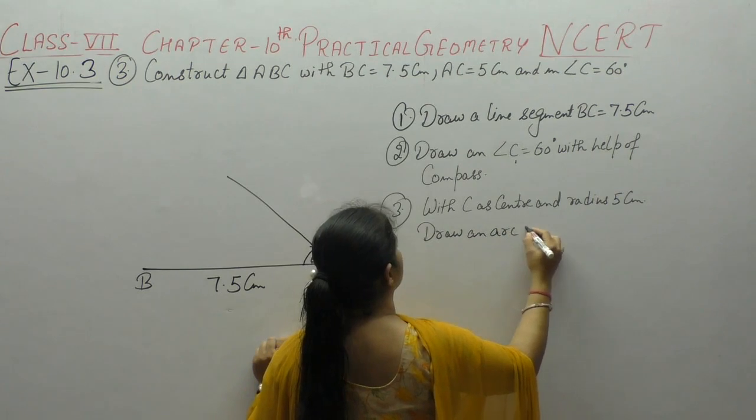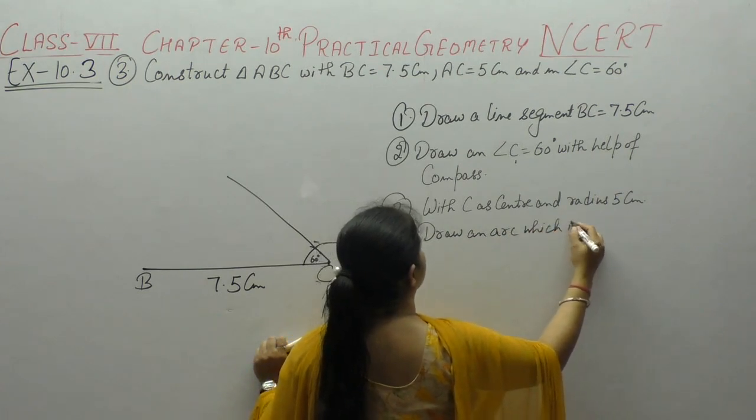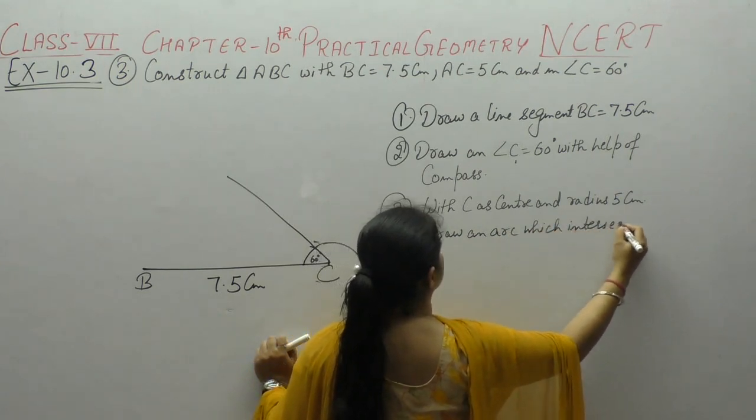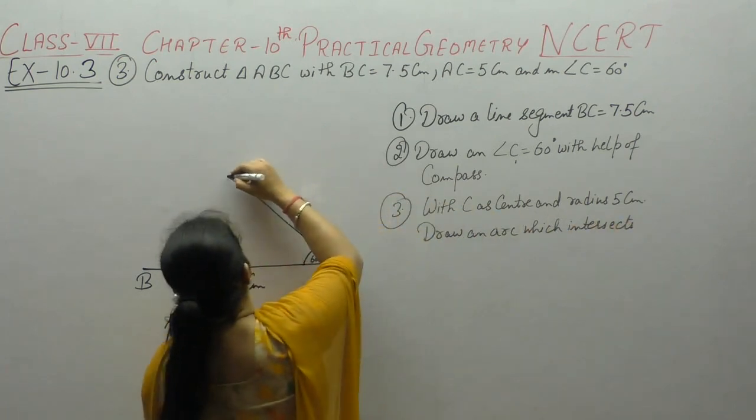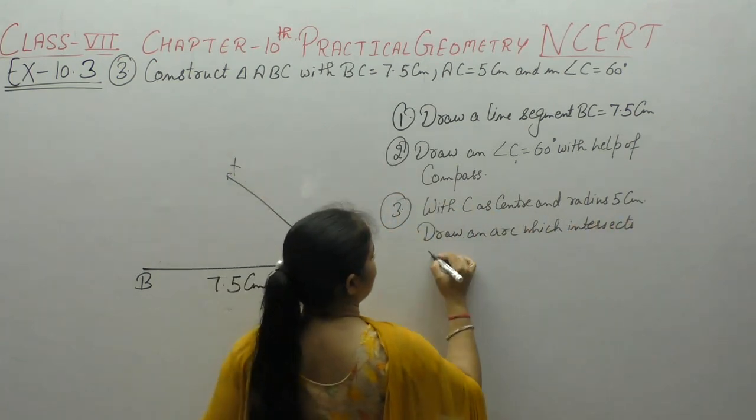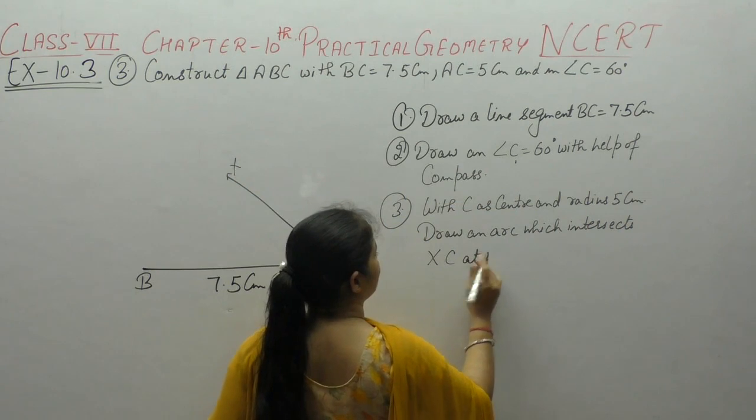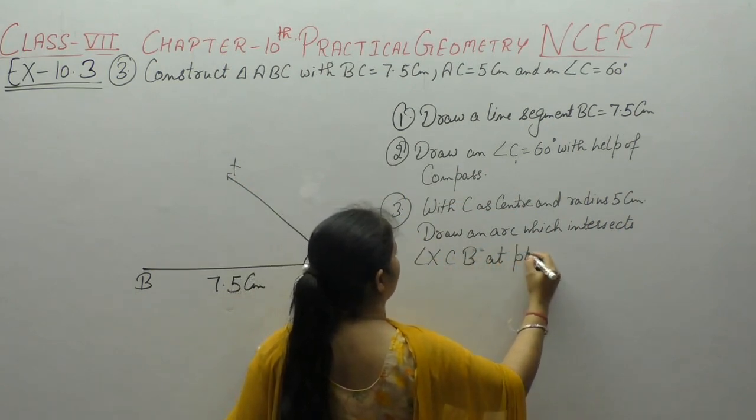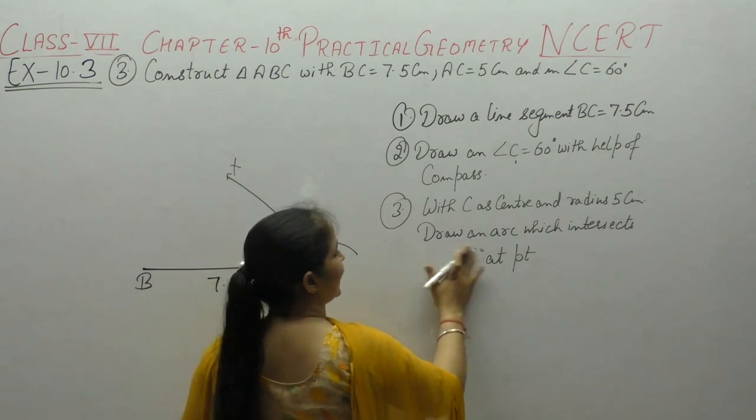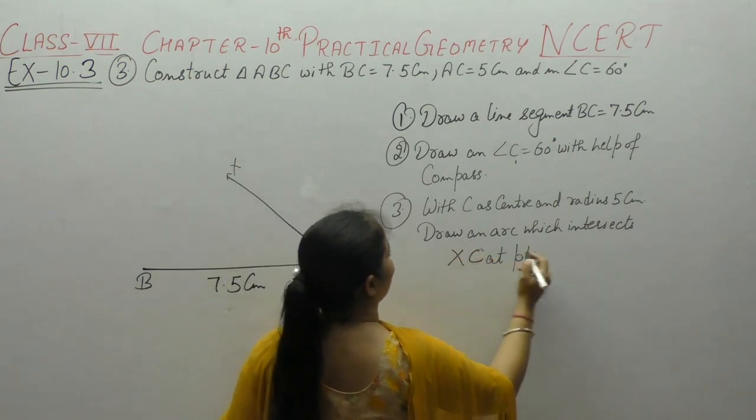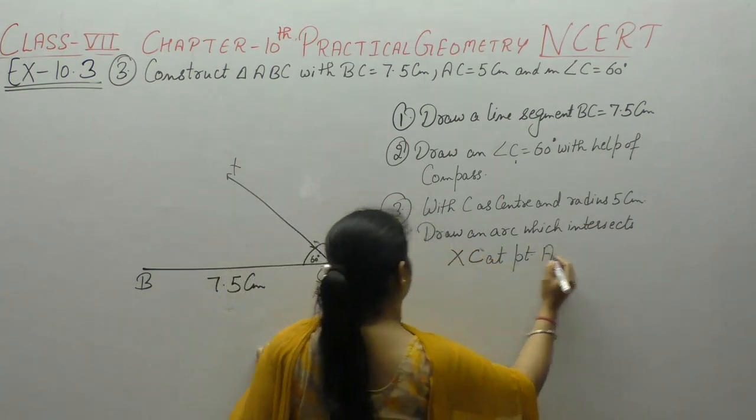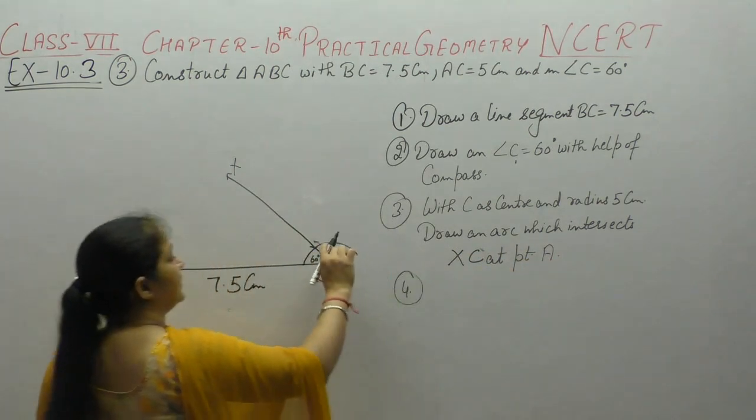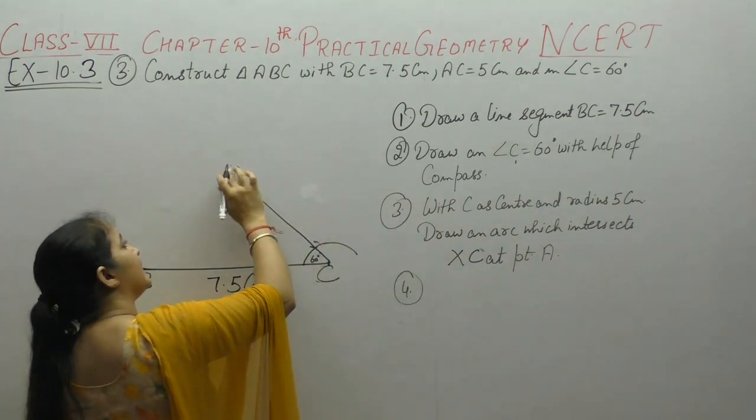Which intersects XC, this angle XCB, at point, the line XC at point A intersects. 5 cm compass open.